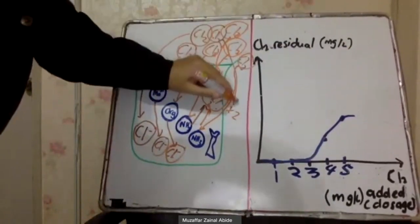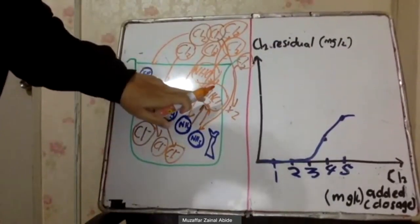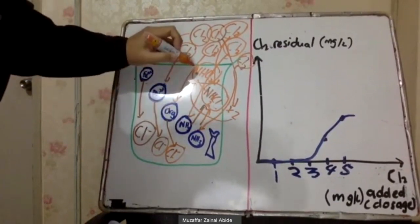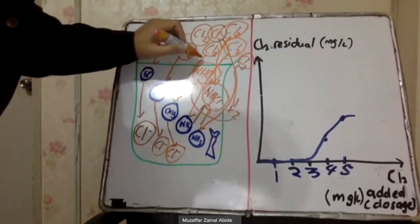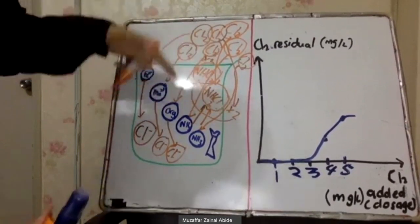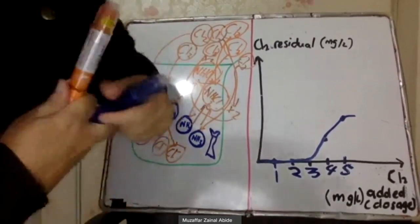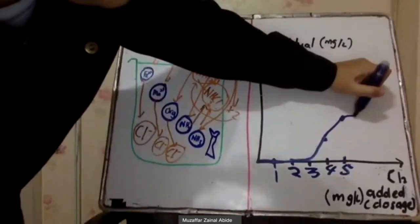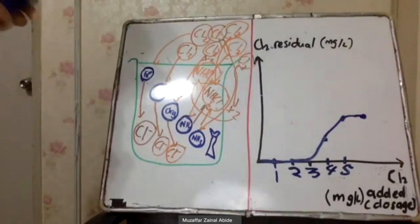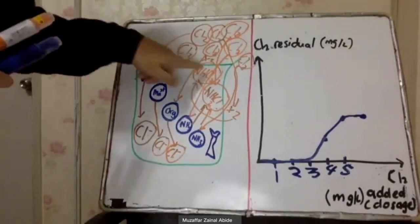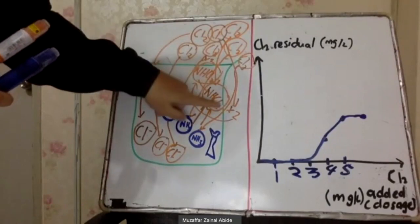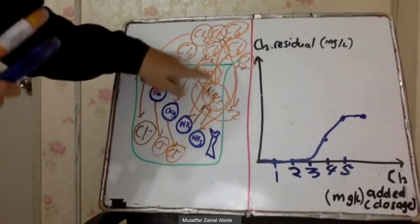Adding another chlorine causes it to react with the monochloramine, converting it to dichloramine (NHCl₂). The residual remains static because we are still producing two combined chlorine species — just changing from monochloramine to dichloramine.